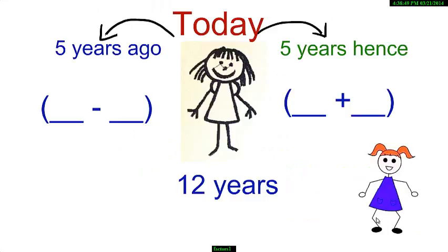Suppose my friends speak arithmetic. My first friend says, today I am 12 years old. She then asks, how old was I 5 years ago and how old will I be 5 years hence or 5 years from now.